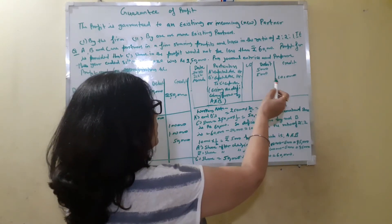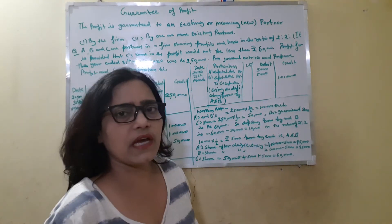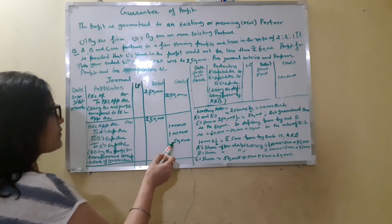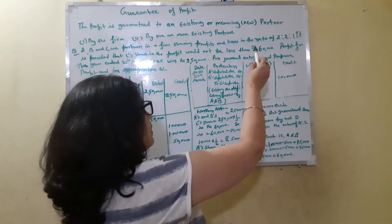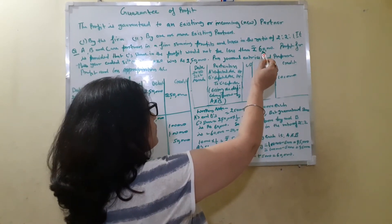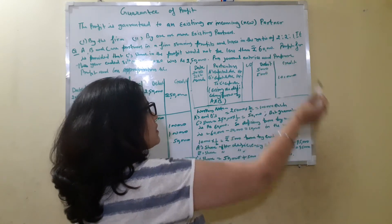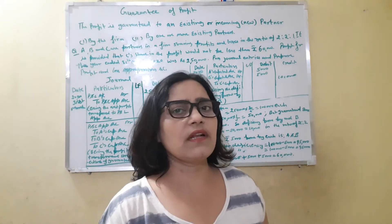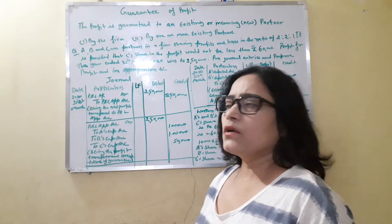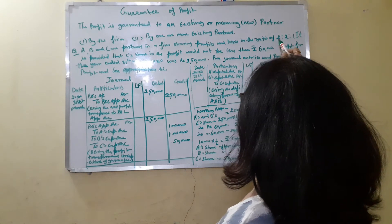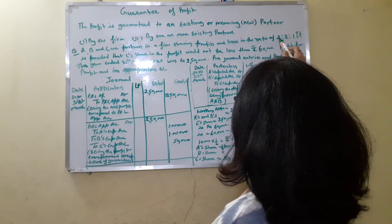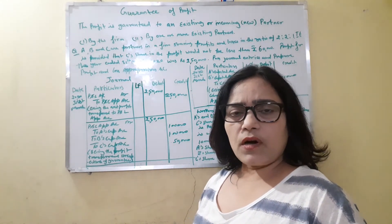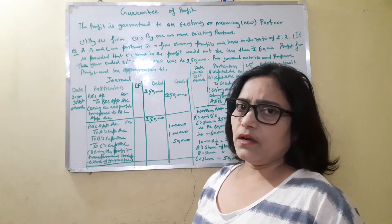Now we will do the entry regarding the deficiency. As per the profit sharing ratio, C is getting ₹50,000, but C has a guarantee from A and B for ₹60,000. So C is getting ₹10,000 less. This ₹10,000 deficiency will be borne by A and B. Since A and B are in the ratio of 2:2, they will share it equally — ₹5,000 each — and pay this amount to C.